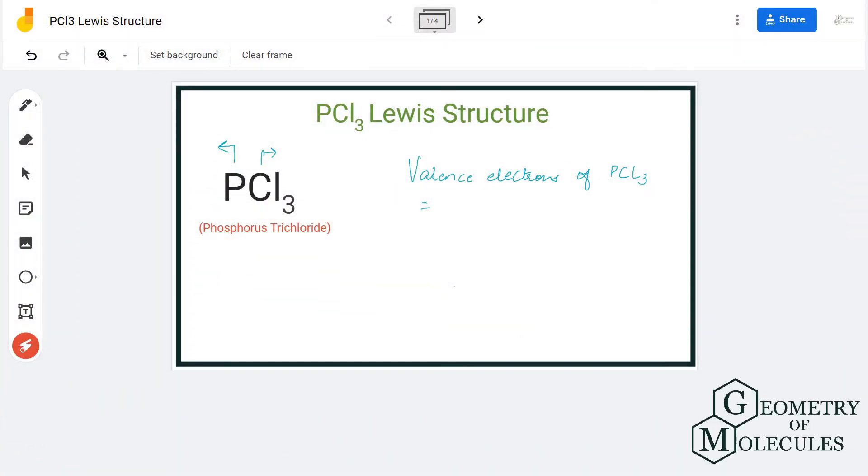Hi guys, today in this video we are going to look at the Lewis structure of PCl3. It's a chemical formula for phosphorus trichloride and it is made up of one phosphorus atom and three chlorine atoms.